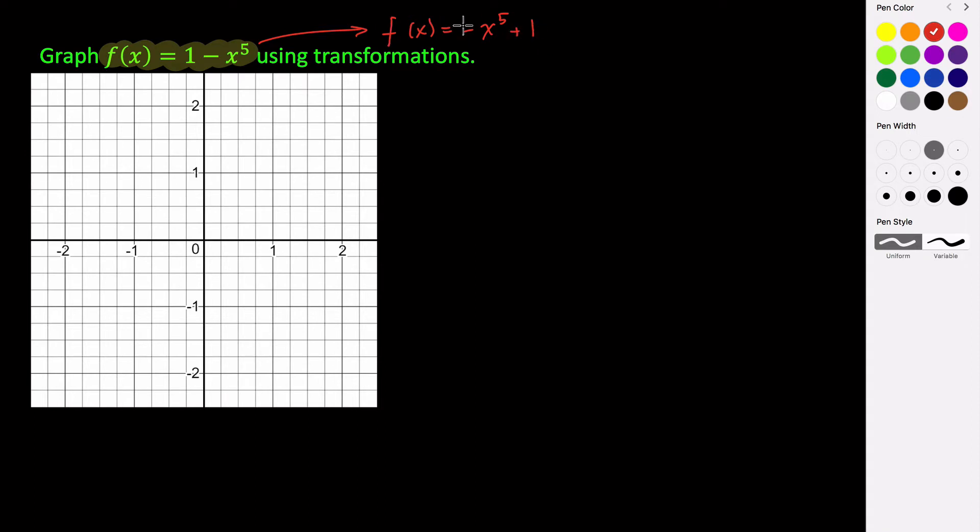Now in order to graph this using transformations, we want to graph the parent function of this first. So the parent function that we're going to graph is f(x) = x^5. That's the first thing that we're going to graph. And if you recall that f(x) = x^5, since it's an odd degree power function...